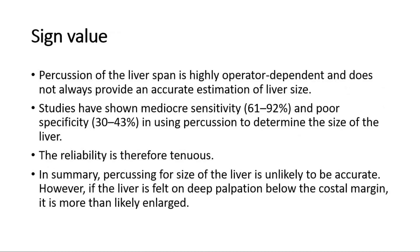For its sign value, percussion of the liver span is highly operator-dependent and does not always provide an accurate estimation of liver size. Studies have shown mediocre sensitivity of 61-92% and poor specificity of 30-43% in using percussion to determine the size of the liver. The reliability is therefore tenuous; percussing for size of the liver is unlikely to be accurate.